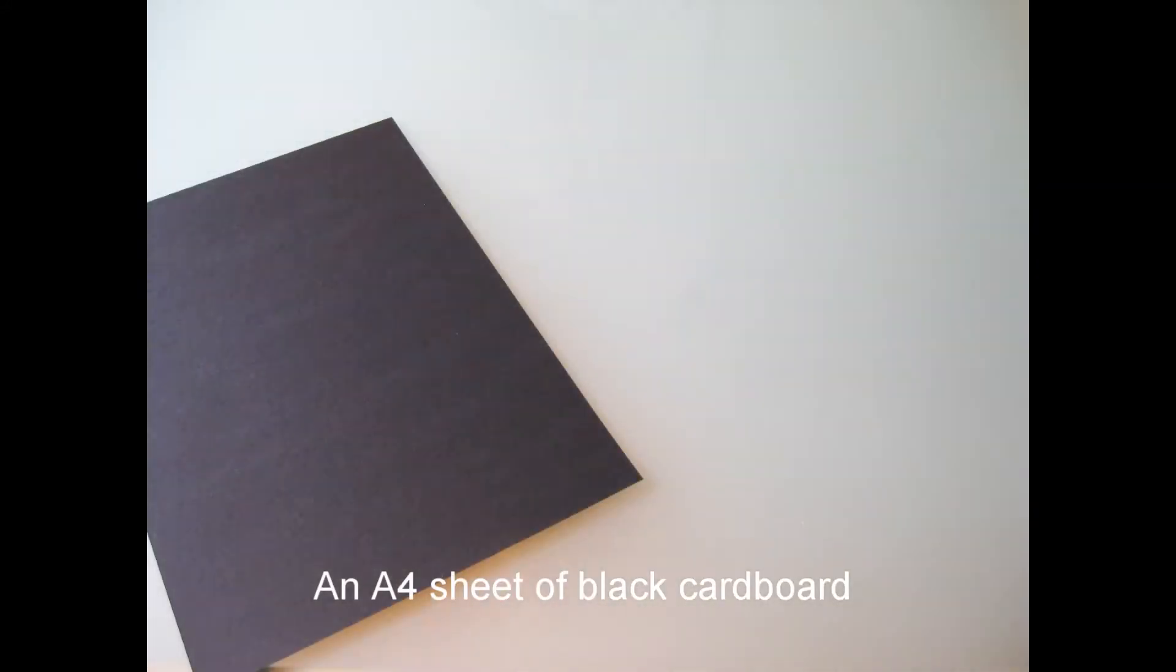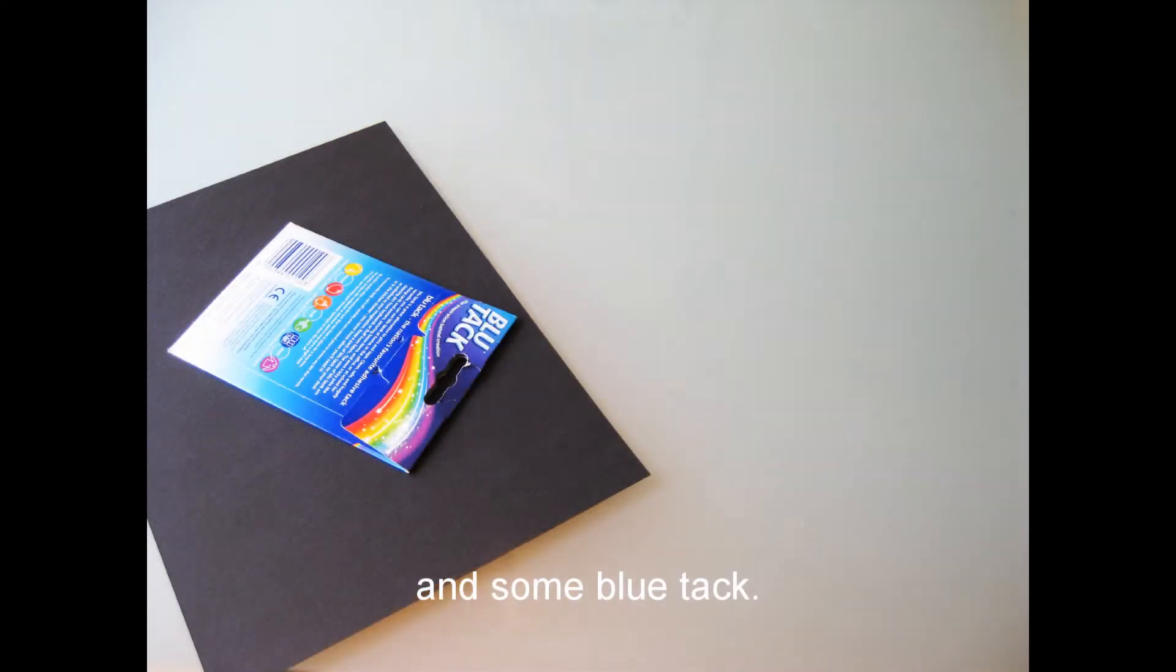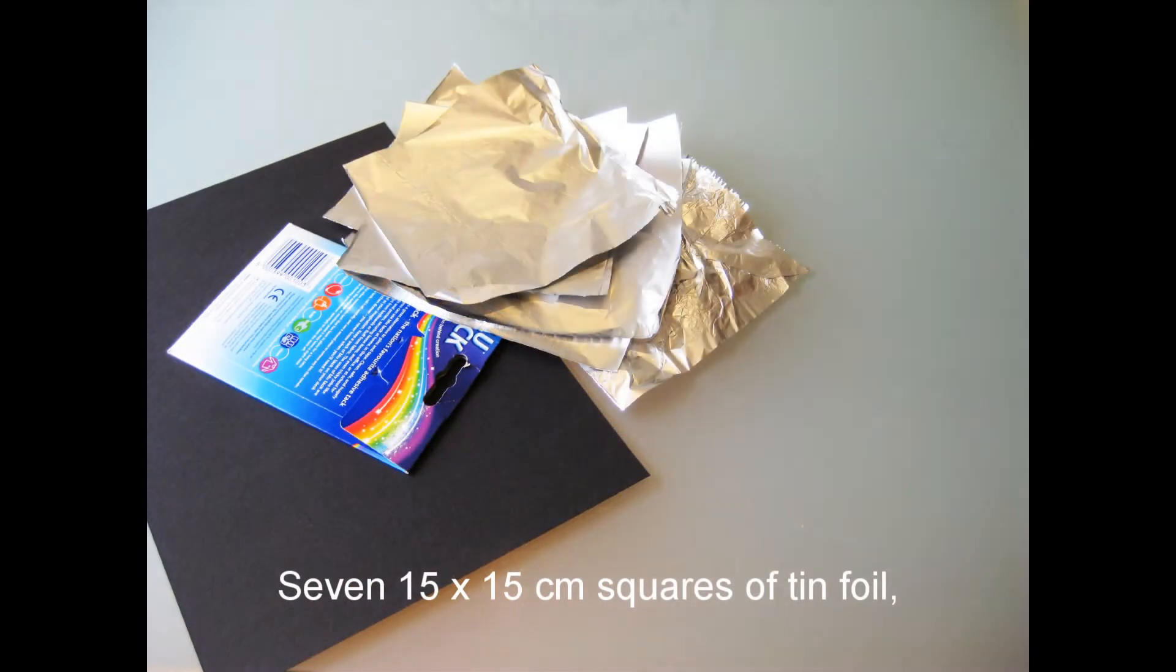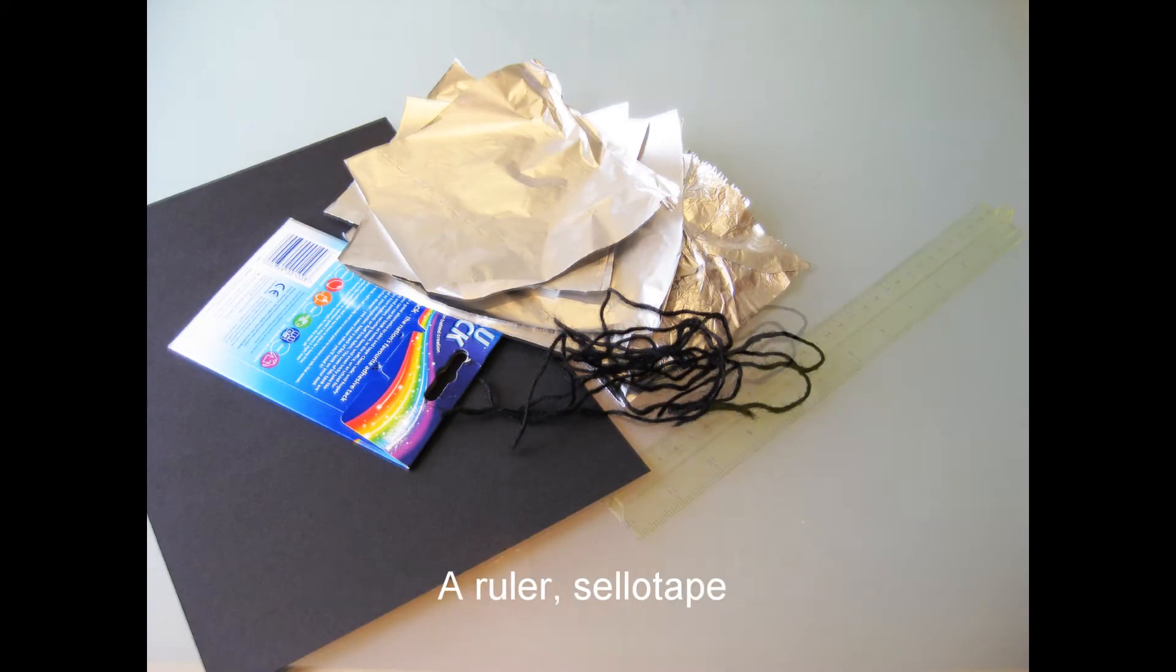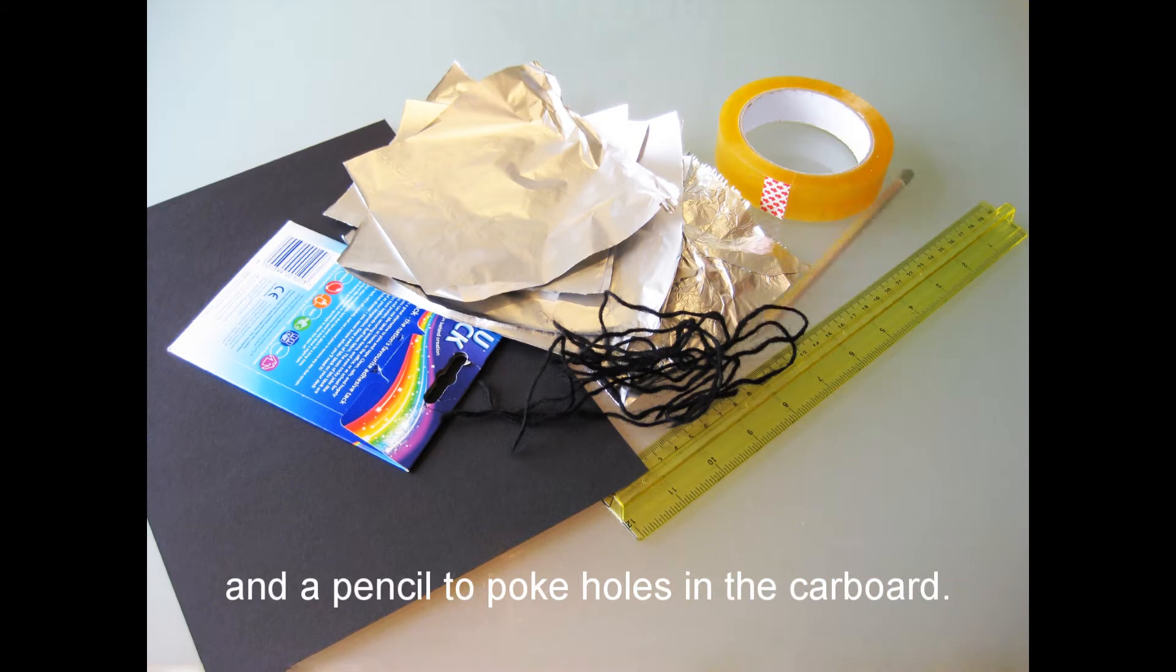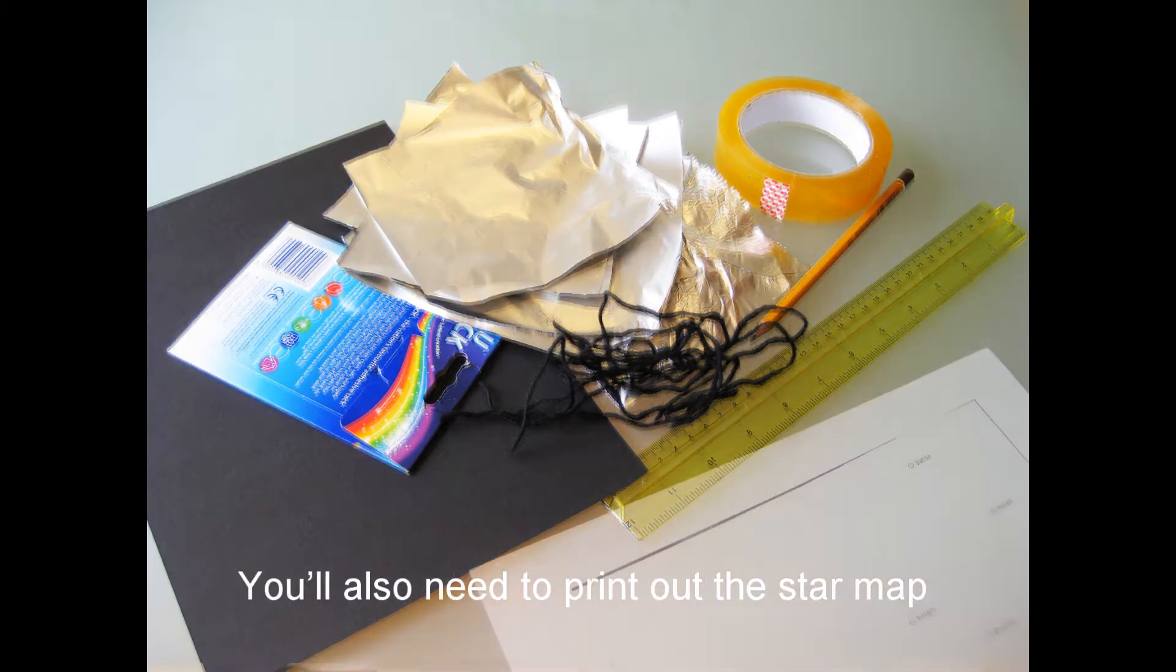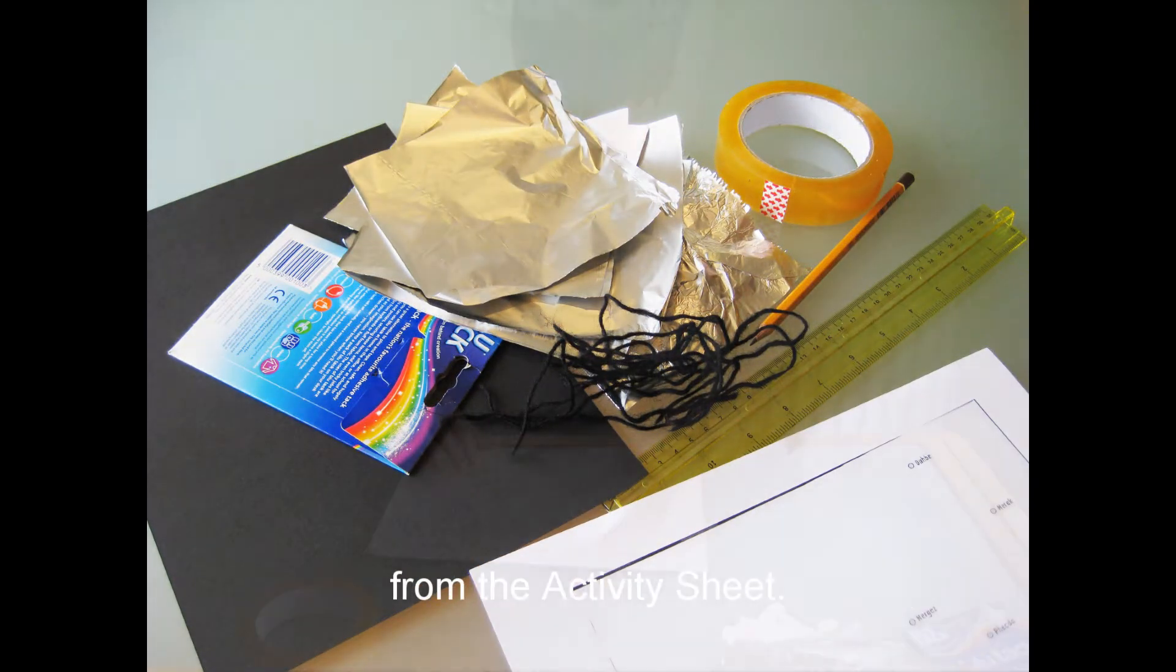You'll need to gather the following items for this activity: an A4 sheet of black cardboard and some blue tack, seven 15x15cm squares of tin foil, seven 30cm lengths of black wool, a ruler, sellotape, and a pencil to poke holes in the cardboard. You'll also need to print out the star map from the activity sheet.